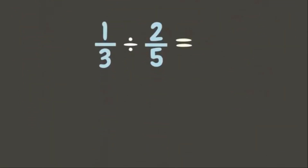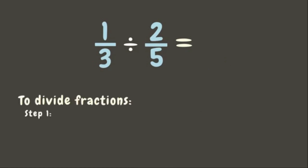Let's try this first example: one-third divided by two-fifths. To divide fractions, the first step is to get the reciprocal of the divisor, or the second fraction.